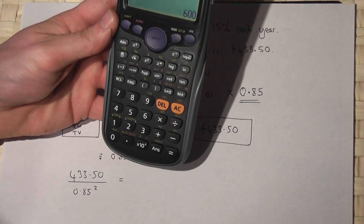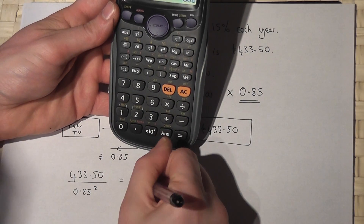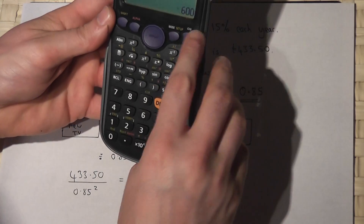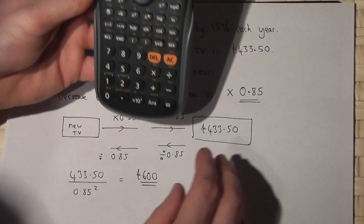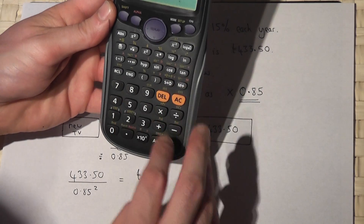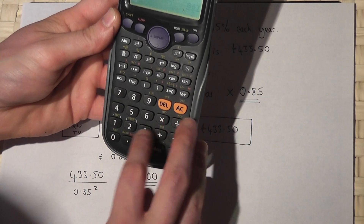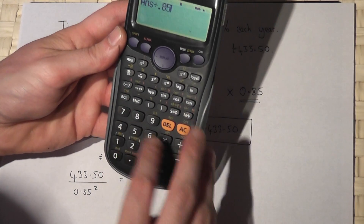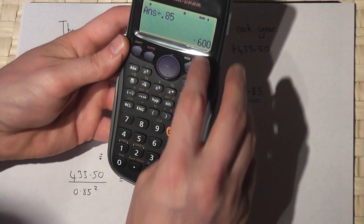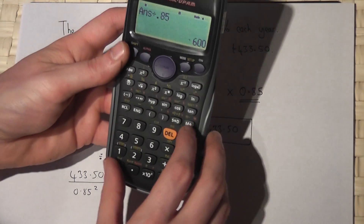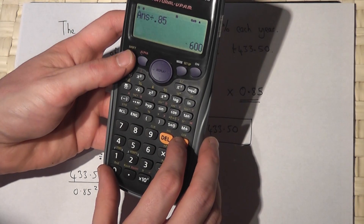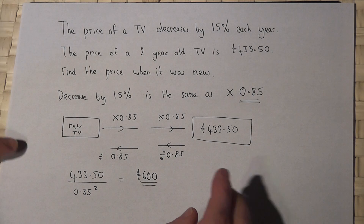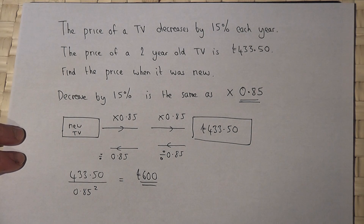...gives the value of £600. Alternatively, we do 433.5 divided by 0.85 once for one year, and then divided by 0.85 again for the second year — that's the same value. So there we go, that's how you reverse a percentage change.